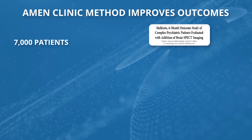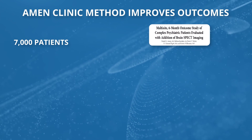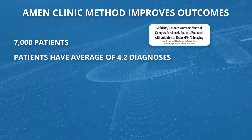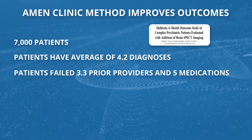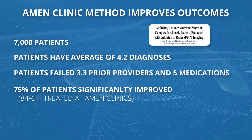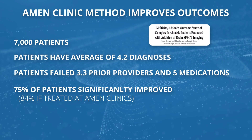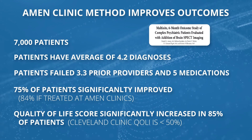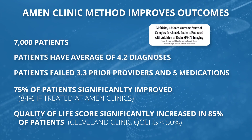The big question about imaging is: do patients get better faster? We have outcome studies, which we do on all of our patients — we have 7,000 outcomes. We published on the first 500 outcomes in 2013. On average our patients are complicated: they have 4.2 diagnoses, failed 3.3 providers and 5 medications. At the end of six months, 75% are better, and if we treat them here at Amon Clinics, 84% are better. The quality of life scores go up in 85% of our patients. The Cleveland Clinic reported quality of life in their patients went up almost 50%.